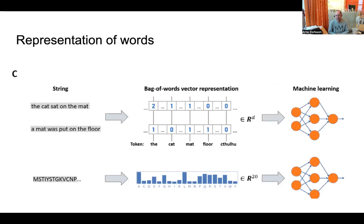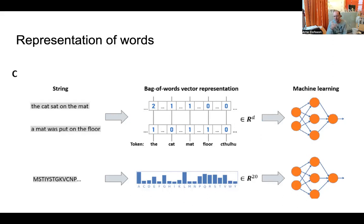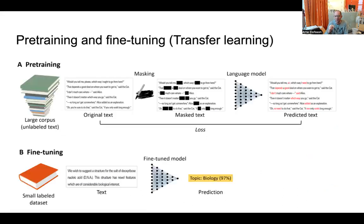Once you have tokens, you need to find a representation. The simplest approach is a bag-of-words vector: you count how many times each word or amino acid appears. For text the dimension is very high because there are many possible words, but for amino acids there are only 20, so you can calculate amino acid frequencies and use that as input for machine learning. This is the older approach, and you can also use one-hot encoding.